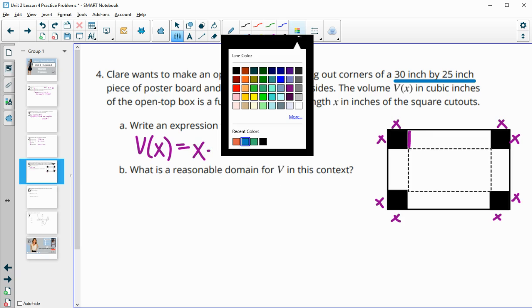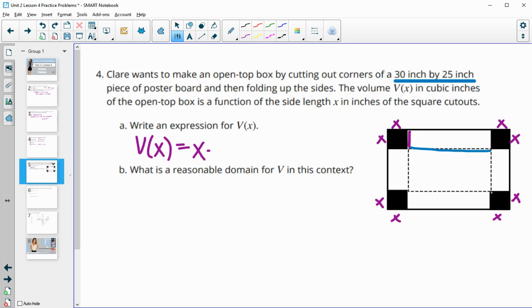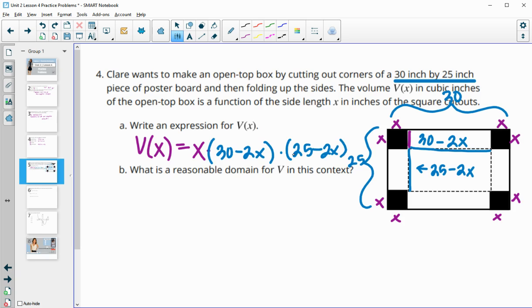Then we also need the length of these sides of the base of the box. This one started at 30 inches, and we're going to subtract off two x's, so this one is 30 - 2x long. This one here started at 25, so this one is going to be 25 - 2x. So then we're going to multiply x(30 - 2x)(25 - 2x). This will be our length times width times height for our volume.